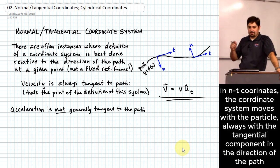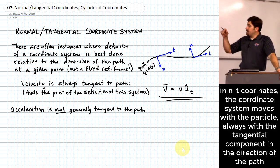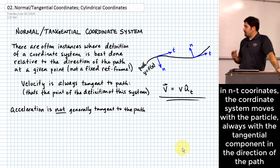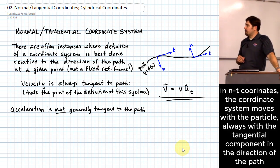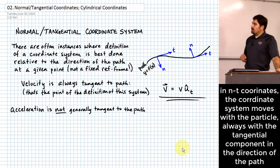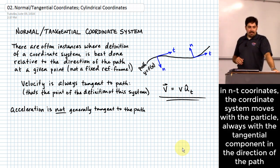This coordinate system basically follows along with the motion, and because of that, the unit vector in the tangential direction is going to be tangent with that path anywhere we go. That's our starting point with the normal tangential coordinate system, but it gets a little bit tricky when we get into acceleration.